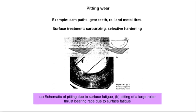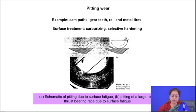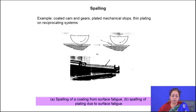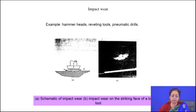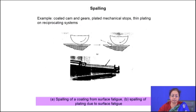The basic difference between surface fatigue wear and other kinds of wear is that in surface fatigue the load is actually fluctuating in nature, instead of static compressive as in other cases of wear. In this particular case we observe 4 different types of wear: pitting wear, spalling wear, impact wear, and brinelling.